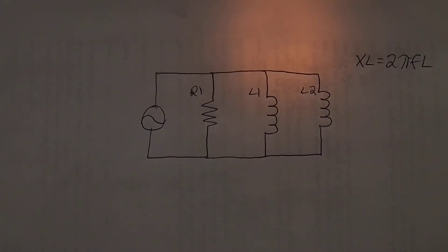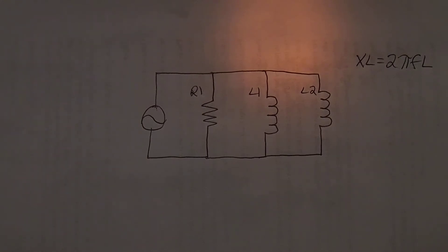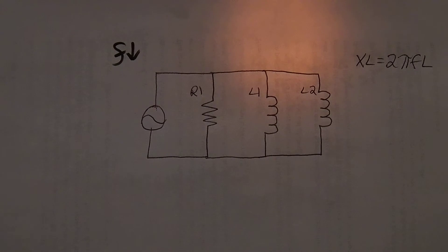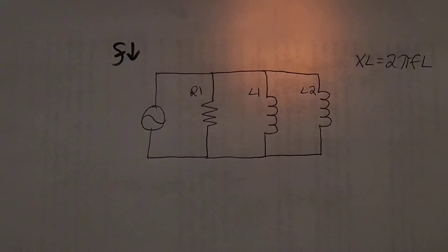What we're going to talk about this time is arrow logic, or cause and effect relationships when frequency or inductance changes in a parallel RL circuit. First, let's talk about if frequency changes. If we're changing frequency — either up or down — it's only affecting your inductor, because resistance is not changed by frequency. However, your inductor is a component that is affected by frequency.